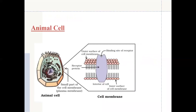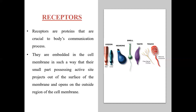Looking at the animal cell structure, we can see the cell membrane which has an outer surface and inner surface. Receptor proteins are present at the cell membrane. They are embedded in the cell membrane in such a way that their small part, which possesses the active site, projects out of the surface of the membrane and opens to the outside region of the cell.